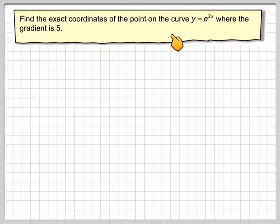Find the exact coordinates of the point on the curve y is equal to e to the 2x, where the gradient is 5.